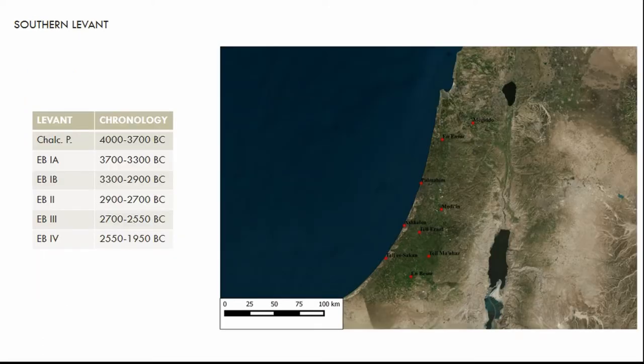The case study I selected is the Early Bronze Age in southern Levant. During this period the area underwent a parabolic development of urban society. At the beginning of the Early Bronze Age 1 period, around 3700 BC, the process of urbanization took place all over the region and lasted until the middle of the third millennium BC, when general retraction of urbanization began.